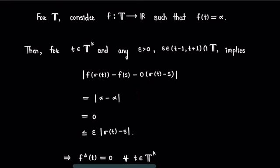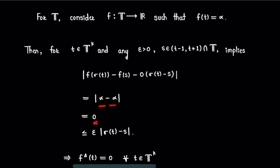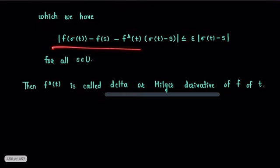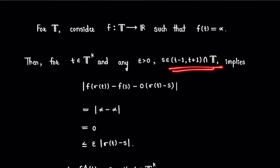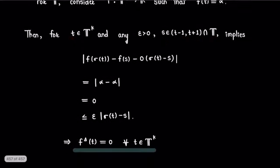Since f takes the value alpha for any t in the time scale T, we have f(σ(t)) = α. Similarly, f(s) = α, so the expression reduces to |α − α| = 0. This is strictly less than or equal to ε·|σ(t) − s|. Therefore, this condition is satisfied for every s in the neighborhood of t.